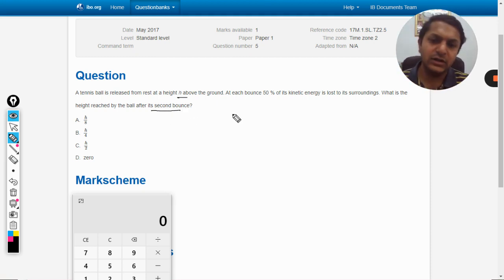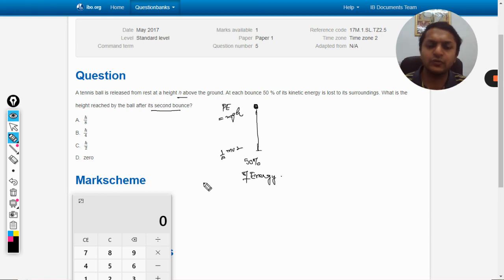So basically, this is the ball and it goes down, and after that 50% of the energy is lost. Let's say the potential energy initially was mgh, and now the kinetic energy is half mv squared.